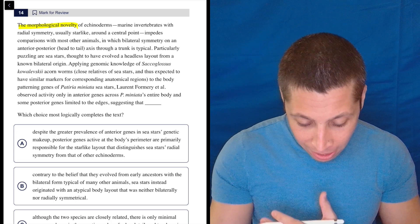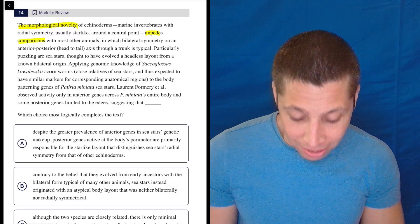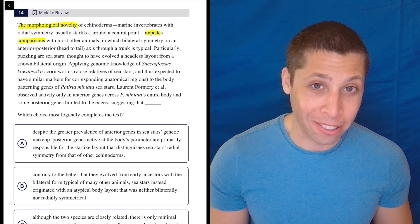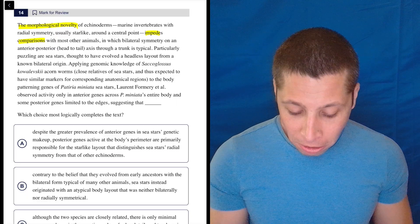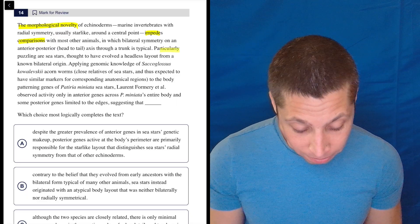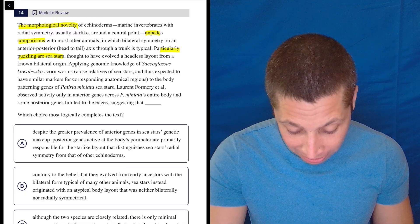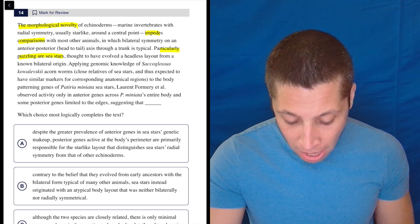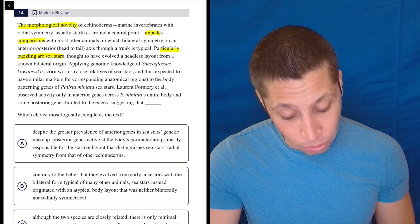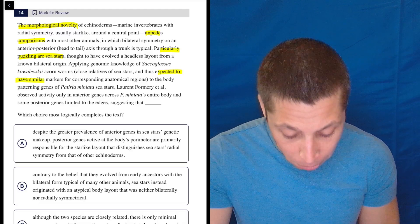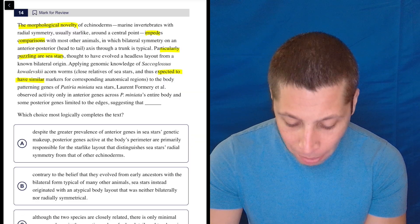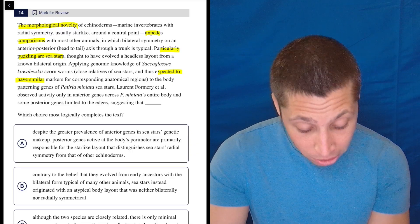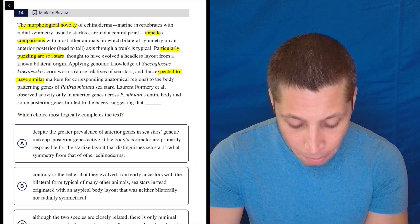So yeah, they look weird. And it impedes comparisons with most other animals. So it's hard to compare these echinoderms with other things. That's kind of all I get, honestly, from there. So then they talk about the shape, but fine. Particularly puzzling are sea stars. Okay, well, that kind of says what it's supposed to say. I don't have to interpret that really deeply. Thought to have evolved a headless layout from a known bilateral origin. All right, more science stuff. We'll come back to that if we need to. Applying genomic knowledge of these acorn worms, close relatives of sea stars, and thus expected to have similar markers for corresponding anatomical regions to the body patterning genes of the sea star. These people observed activity only in anterior genes across the sea star's entire body, and some posterior genes limited to the edges, suggesting that.